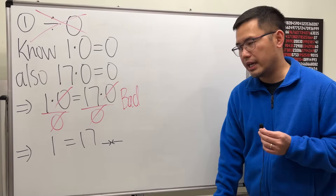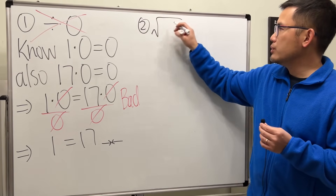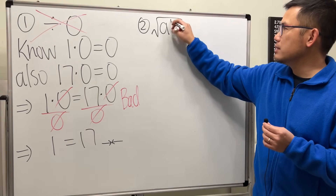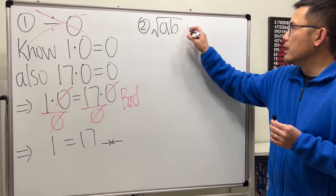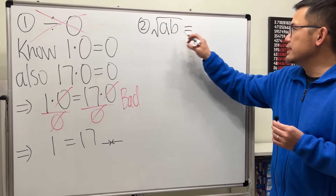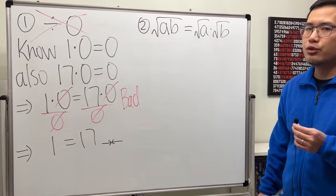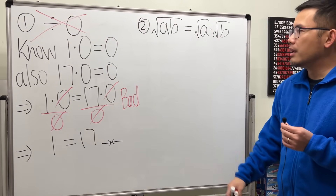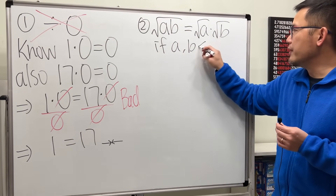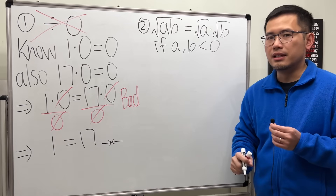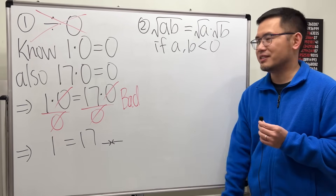Now the second one: the square root of two numbers multiplying inside. If you have square root of a times b and you want to break this apart as square root of a times square root of b, you have to be careful — because if a and b are both negative, then in fact this is not okay.